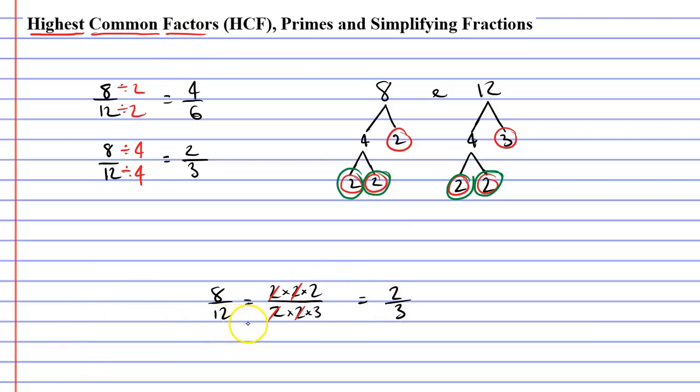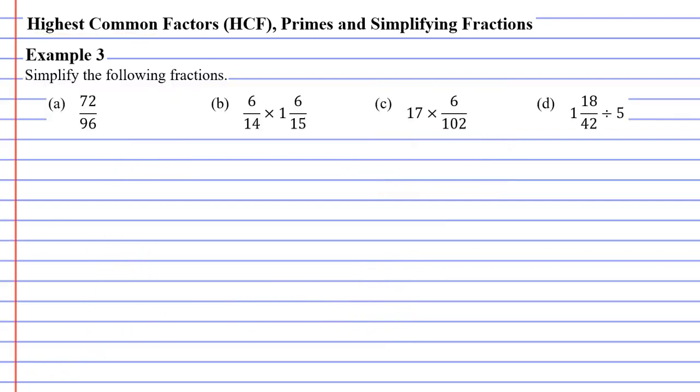Now, when you use this method, when you break numbers into their prime factors and cancel, you are guaranteed to get a fraction in its simplest form every time. Anyway, let's now move on to example 3, starting with question A.